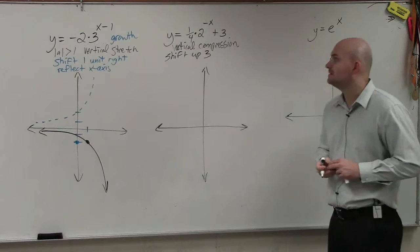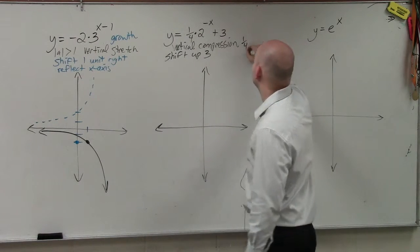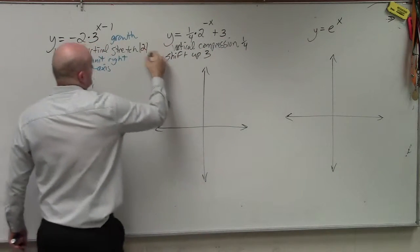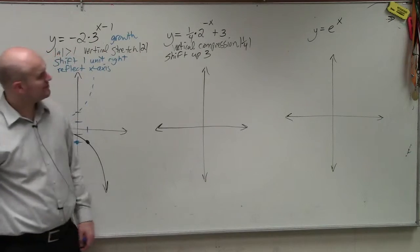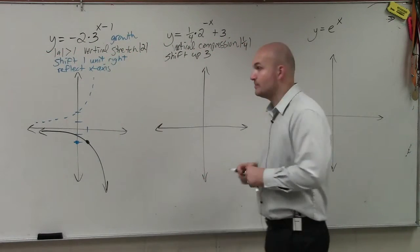Julian, what else do you see? OK, so negative x is over 2. OK, so we have a reflection.